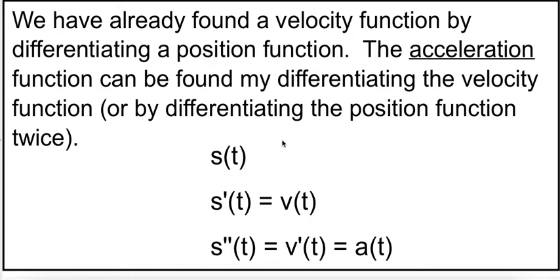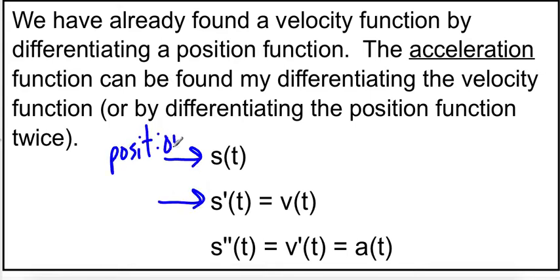One of the prime examples of why we would want to do this is with the position function. We talked last week about how we can find a velocity function by taking the derivative of the position function. So if we have the position function s of t, and we want to know the instantaneous rate of change, we take the derivative of it — and this is the velocity.